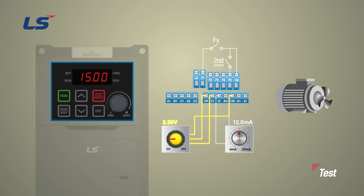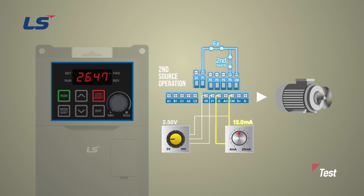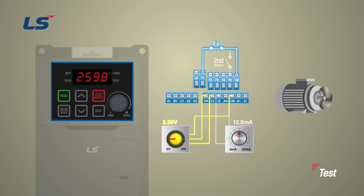Turn terminal P1 on to perform the operation. Terminal P5 is off, so you drive at the frequency of the basic operation, 15 hertz. Switch terminal P5 on — frequency command has changed to current and operating speed will be changed to 30 hertz. Turn terminal P5 off again and speed has changed back to 15 hertz.